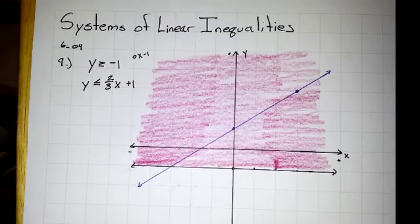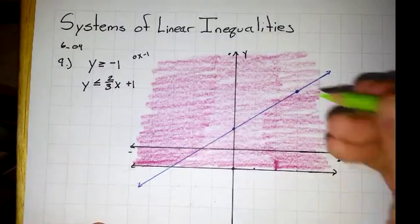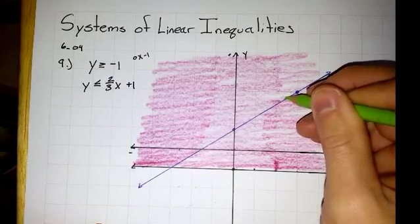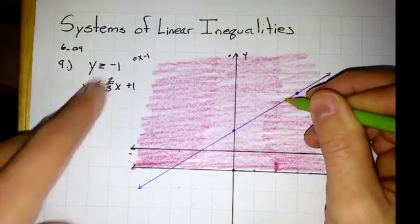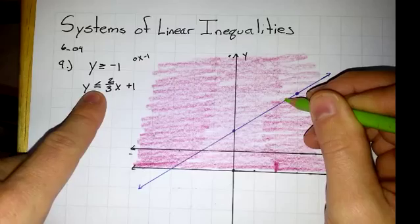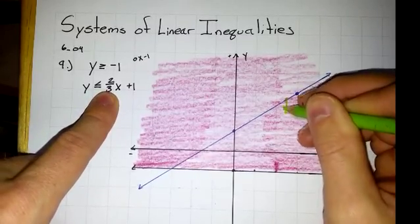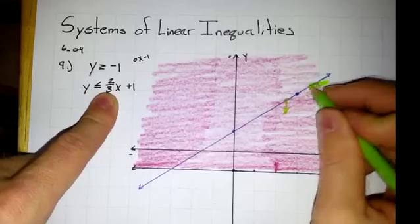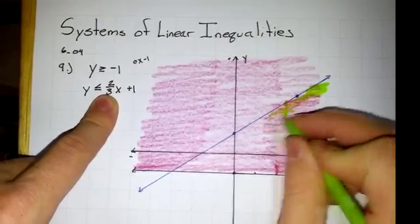And now we've got to take care of the shading of this one as well. If I put my pencil on the line anywhere, it doesn't matter where, it says y, which is up and down, is smaller than the line. To go smaller, you must go down. So we're going to shade below this first line.